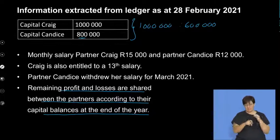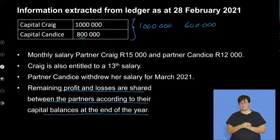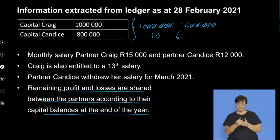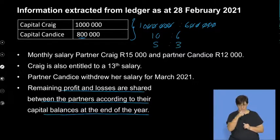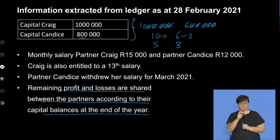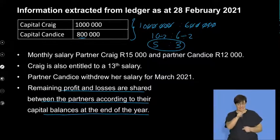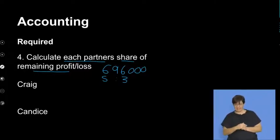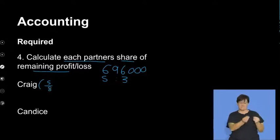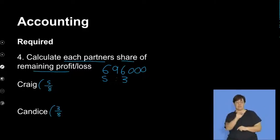If I simplify by getting rid of all the zeros, I'm dividing in the ratio of 10 to 6. I can further reduce this ratio by dividing by 2, giving a ratio of 5 to 3. So Craig gets 5 eighths of the remaining profit, and Candice gets 3 eighths — where 5 plus 3 gives us 8, which is the whole.